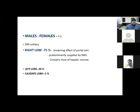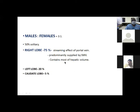Males to females ratio is 3:1. About 50% are solitary, the rest can be multiple. The right lobe is affected in 75% of cases, due to the streaming effect of the portal vein — the right branch is shorter, receives more blood quickly, and is predominantly supplied by the superior mesenteric vein, containing most of the hepatic volume. The left lobe accounts for 20% and the caudate lobe about 5%.